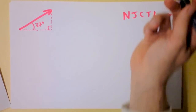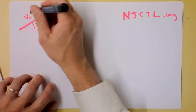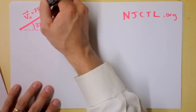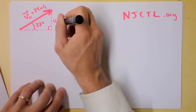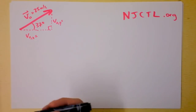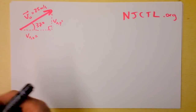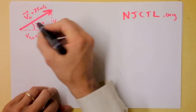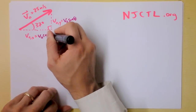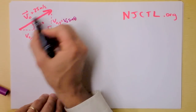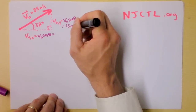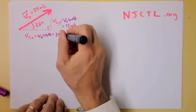V-naught is 25 meters per second. V-naught in the y direction equals v-naught times the sine of theta, and v-naught in the x direction equals v-naught times the cosine of theta. Following the 3-4-5 triangle, this is 5 times 5, so v-naught-y will be 3 times 5 — that's 15 meters per second upward — and v-naught-x will be 4 times 5, so 20 meters per second.